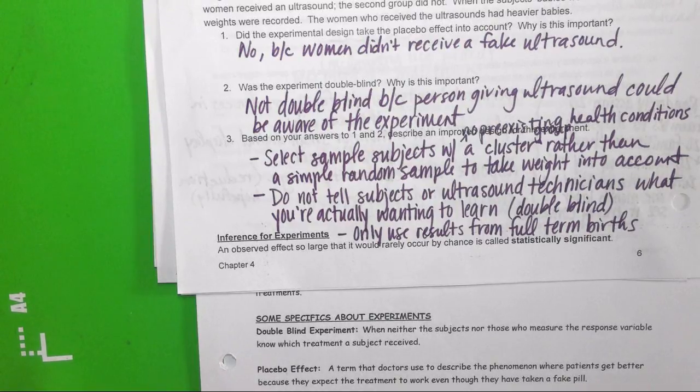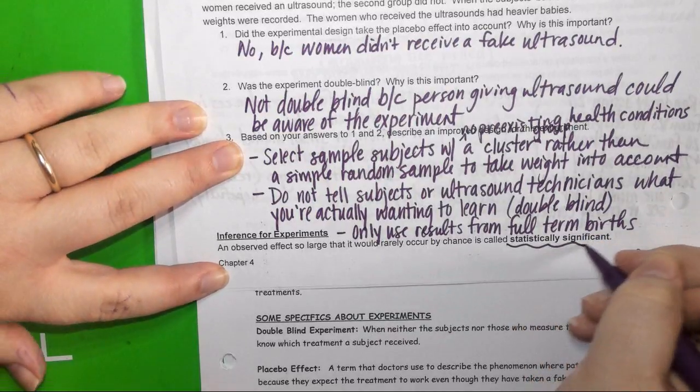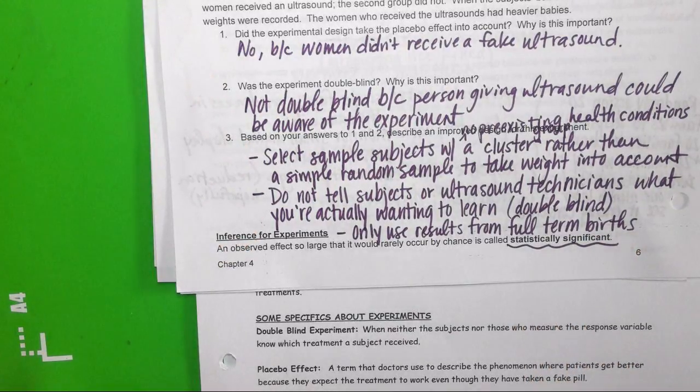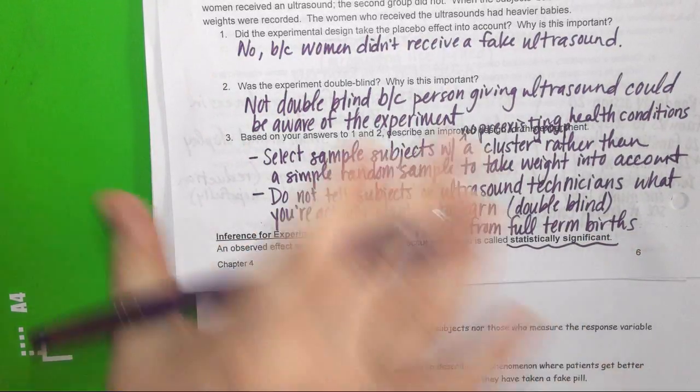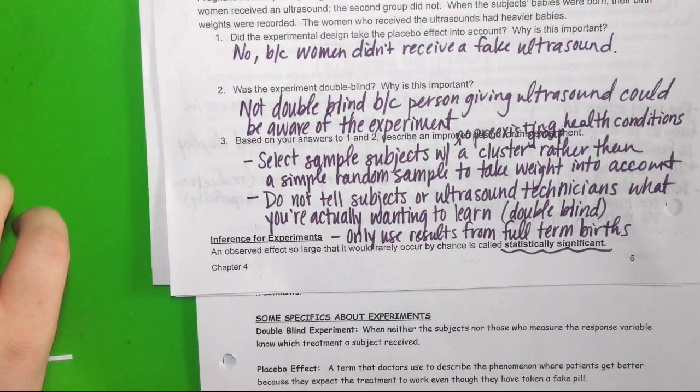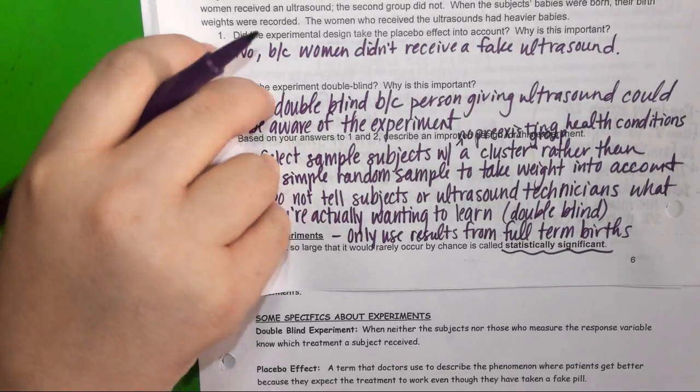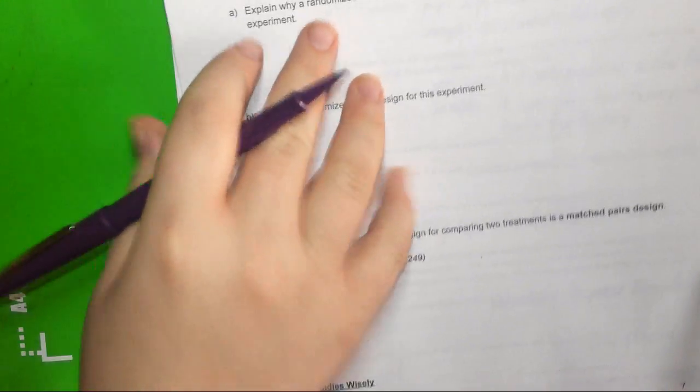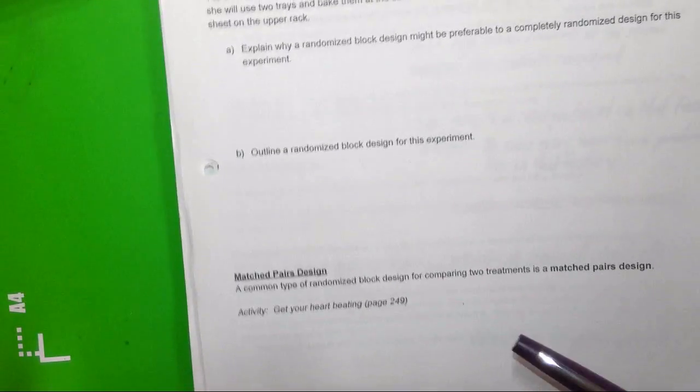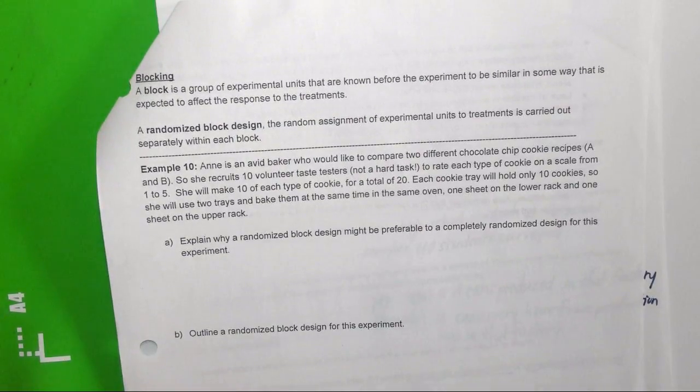Inference for experiments. If an effect so large that would rarely occur by chance, it's called statistically significant. So if something happens and it's really important, we call it statistically significant. That's our go-to word. Significant.